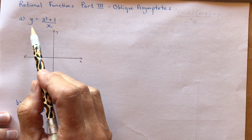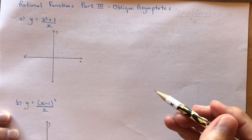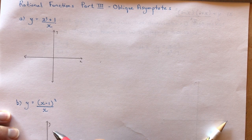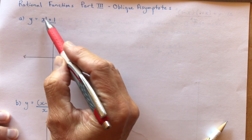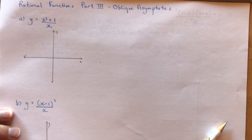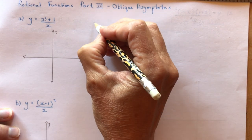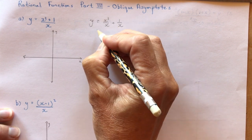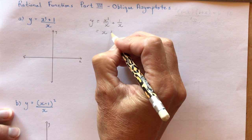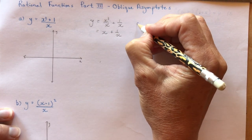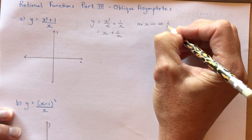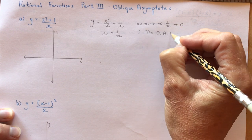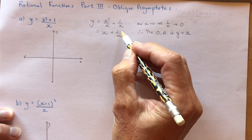First one: y = (x² + 1)/x. We want to find the oblique asymptote — you have to look at the degree. This is x² over x, so it's one more: oblique asymptote. This equals x²/x + 1/x. And x²/x simplifies to x. As x approaches infinity, 1/x approaches zero, therefore the oblique asymptote is y = x.